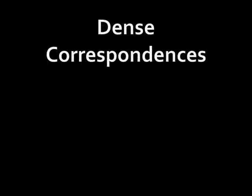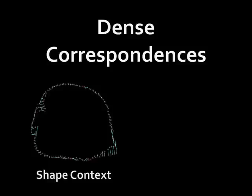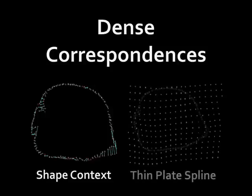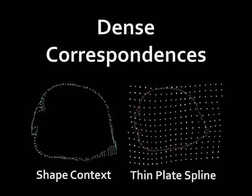To map the instances to each other, dense correspondences are needed. Shape contexts are used to match boundary points, and then thin plate splines are used to model the transformations which give dense correspondences.